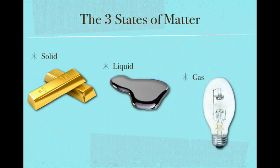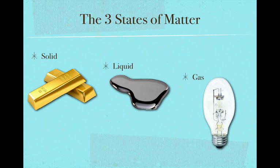I've used metals for all of these. For solid, I've got some gold bars. For liquid, I've got some liquid mercury, and for gas there's a mercury vapor light bulb — there's actually vaporized mercury inside that light bulb. I want you to realize that quite often when we think of states of matter, we go to water — ice, liquid water, steam. Most pure substances will undergo these changes as well, not just water.